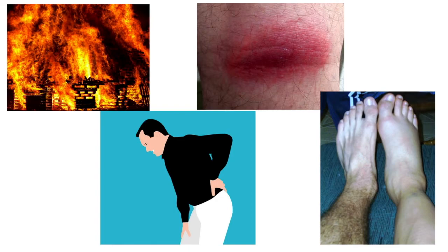First is calor, or heat. Typically since you're getting more blood flow to that area, you're bringing more warm blood from the core to that spot, so it's going to be warmer than normal. There is rubor, which is redness — again there's more blood coming to the area, so there's going to be more of a reddish appearance to the tissue directly around the injured area.